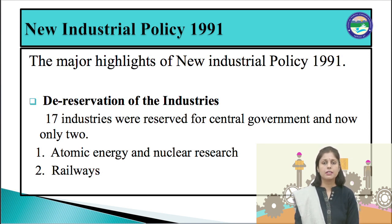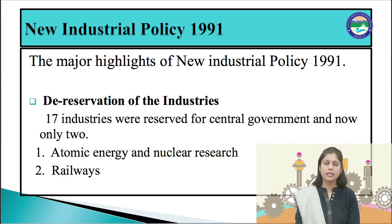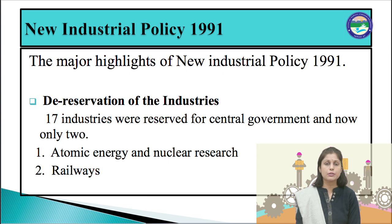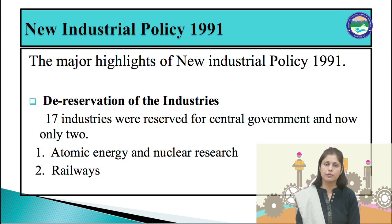Earlier, as per the industrial policy of 1956, 17 industries were reserved for the central government. The 1991 industrial policy reduced this number to 8. In coming years, many other industries were also opened for private sector investment. At present, there are only two industries which are fully or partially reserved for the central government: atomic energy and nuclear research, and railways. Though many functions related to railways have been allowed private entry, the private sector cannot enter the sector as a full-fledged railway service provider.